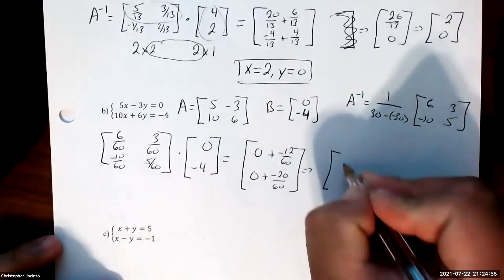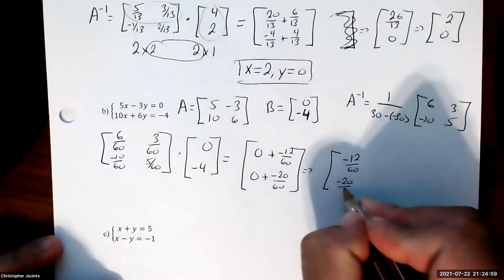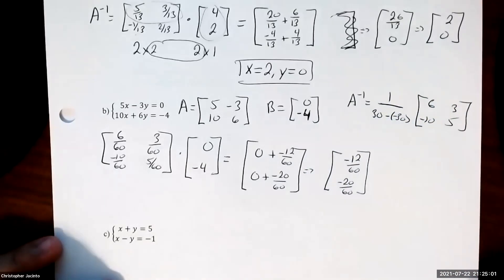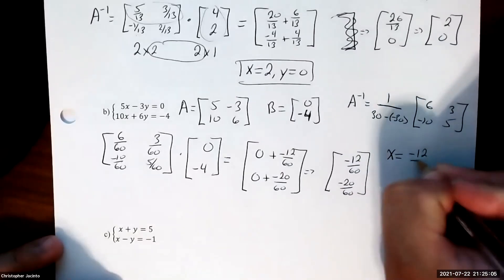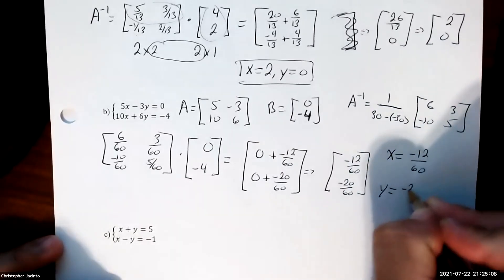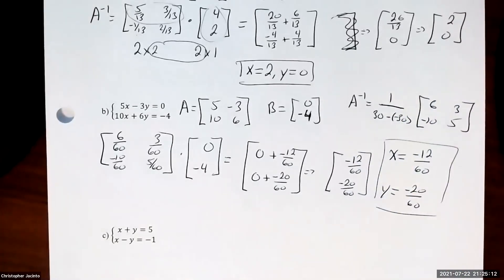So this ends up being negative 12 over 60 and negative 20 over 60. Now if you want, you can simplify them, but you can leave them just like this as the answers because they technically are the answers. Any questions? No? Not too bad? Pretty easy stuff, hopefully.